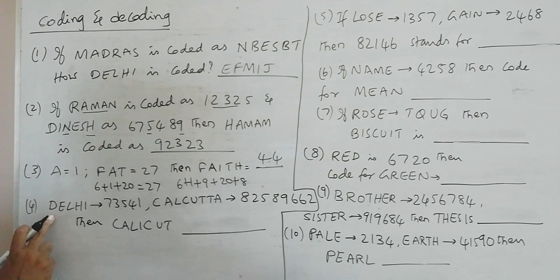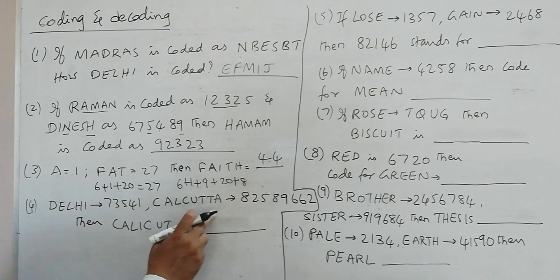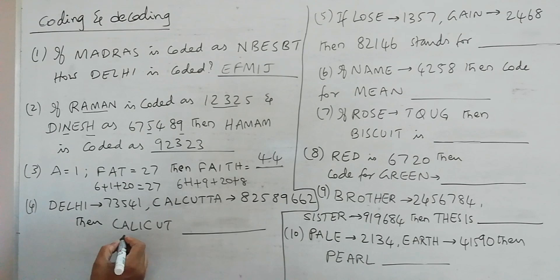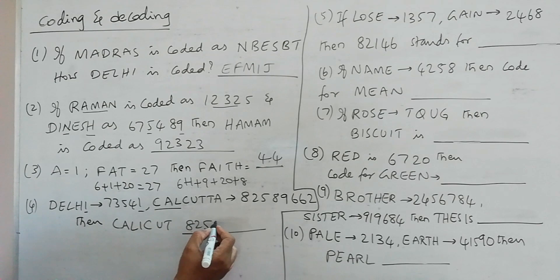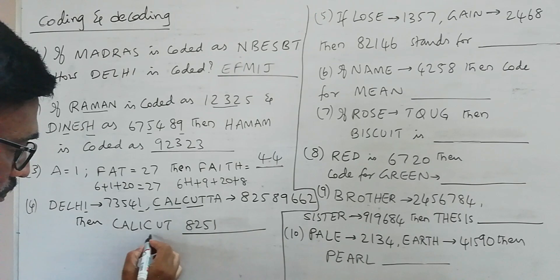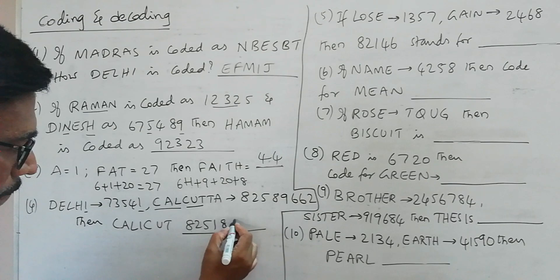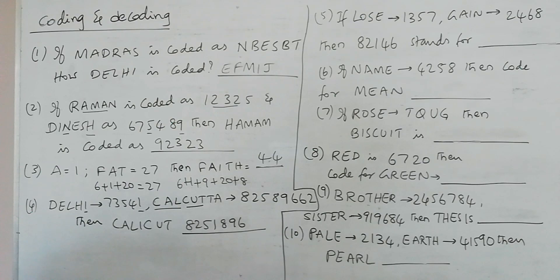Here we have DELHI coded as 73541, and CALCUTTA is coded as 82589662. Then what is the code for CALICUT? So here we have C-A-L, which is 825. I is the last letter in the word Delhi, so it is coded as 1. So 8251, and here we have C-U-T. So C-U-T is 896. So 8251896 is the code for CALICUT.